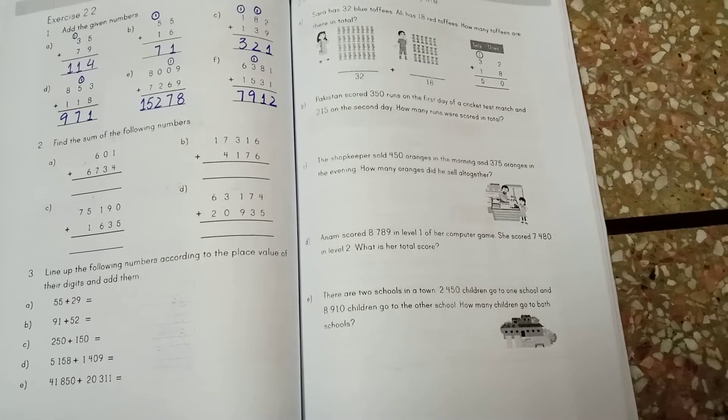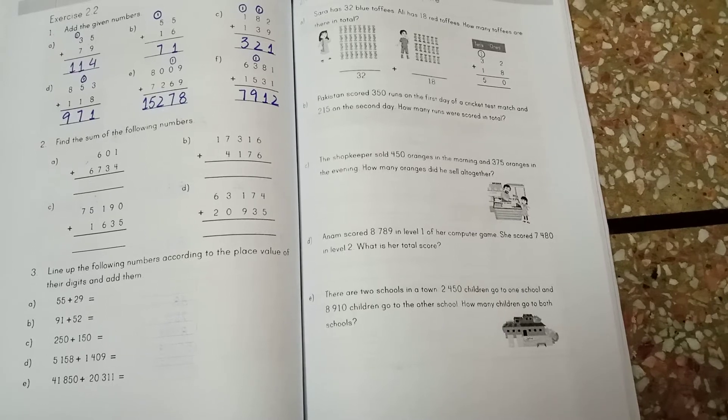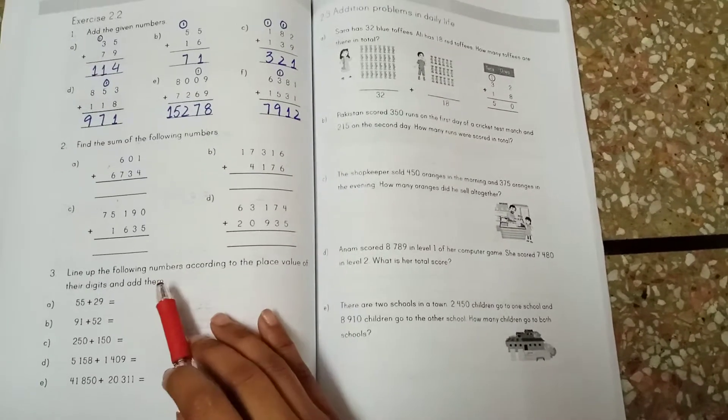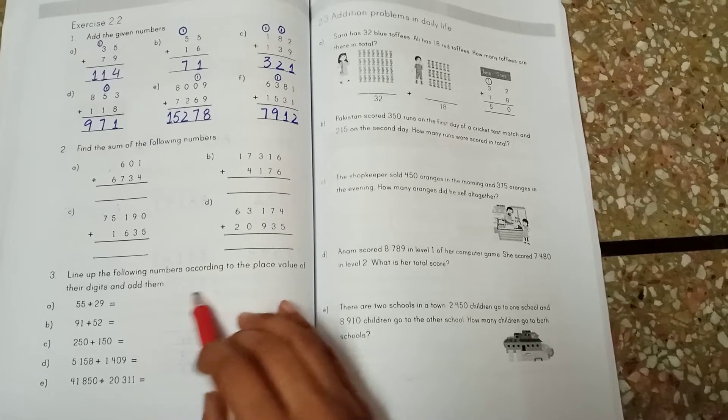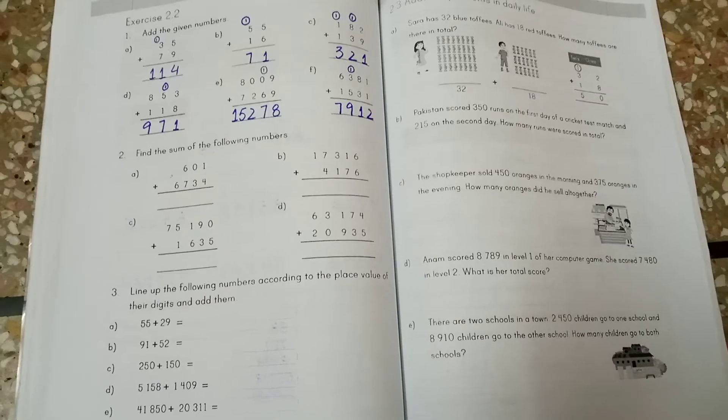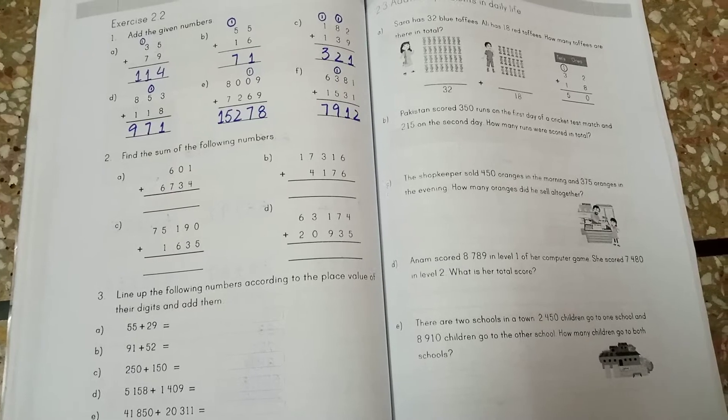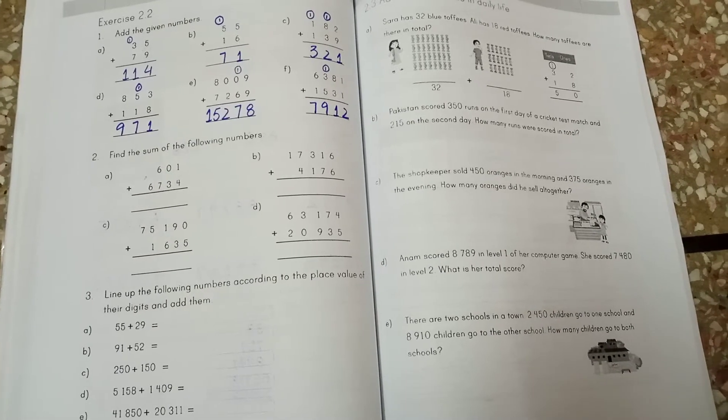Today we will do exercise number 2.2, question number 3. Line up the following numbers according to the place value of their digits and add them. We will do these questions in your notebooks, so all of you open your math notebooks.